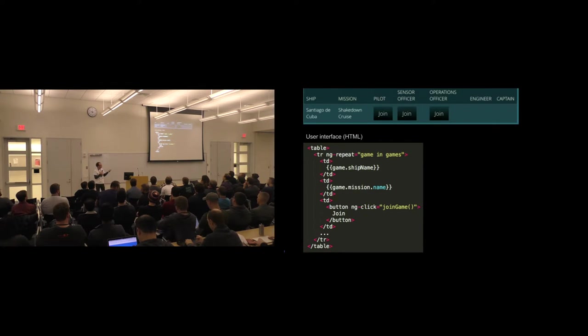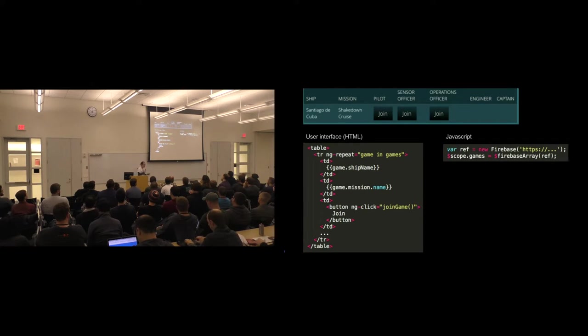Except you might not recognize where it says ng-repeat up here. So ng-repeat is Angular's way of saying this element and all sub-elements will be repeated. And it will actually be repeated once for every object in the games array or games list. And then you just say, okay, so I want the, in the first cell, the ship name should be listed. In the second cell, the mission name should be listed. In the third cell, there will be a join button and so on. So the HTML part of this is pretty simple. Now, in the JavaScript part, we need to define the game's array. And this is how you do it. This comes from the server, right? So we just, we need to create a database connection to the Firebase database. And then from that, from there, we just use the Firebase array object. And boom, we're done.